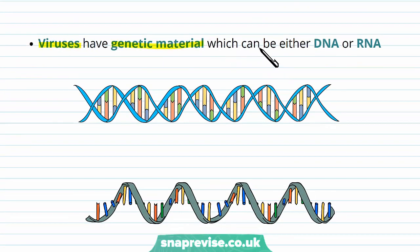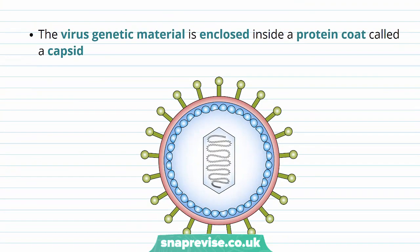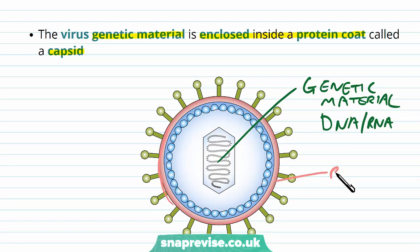Viruses have their own genetic material, which can either be DNA — a double-stranded molecule — or RNA, which is a single strand but in the same basic shape. The genetic material is kept safe, enclosed inside a protein coat called a capsid. Looking at the diagram of a virus, we have the genetic material in the center, either DNA or RNA, and surrounding it is this protein coat, the capsid, which can vary in its complexity.